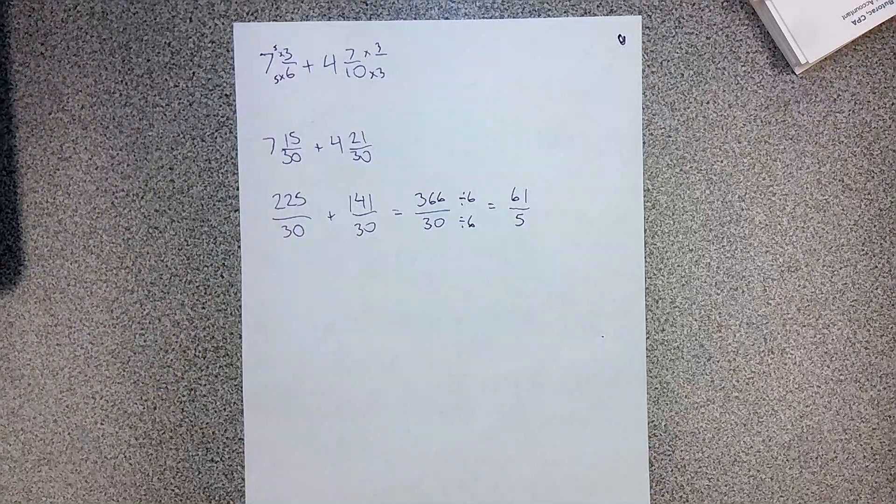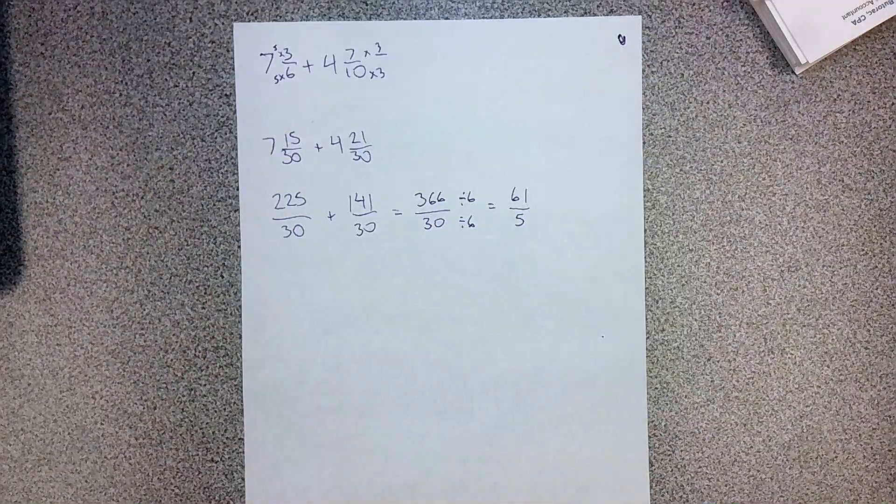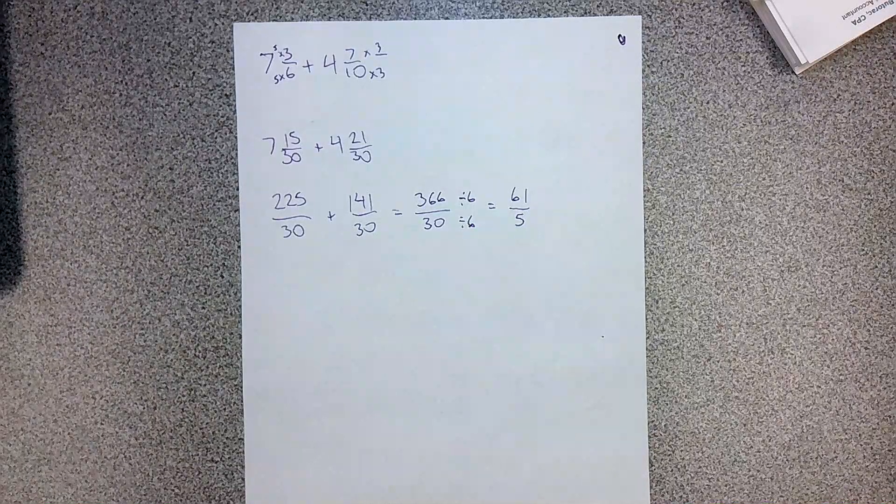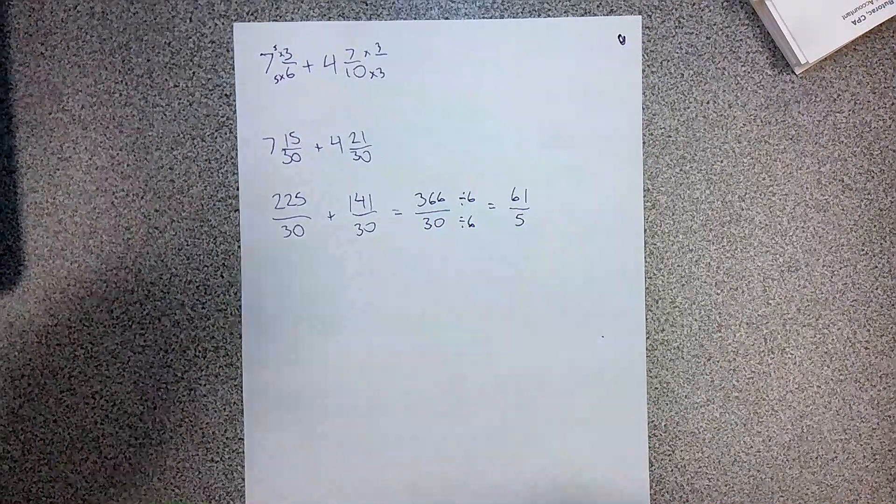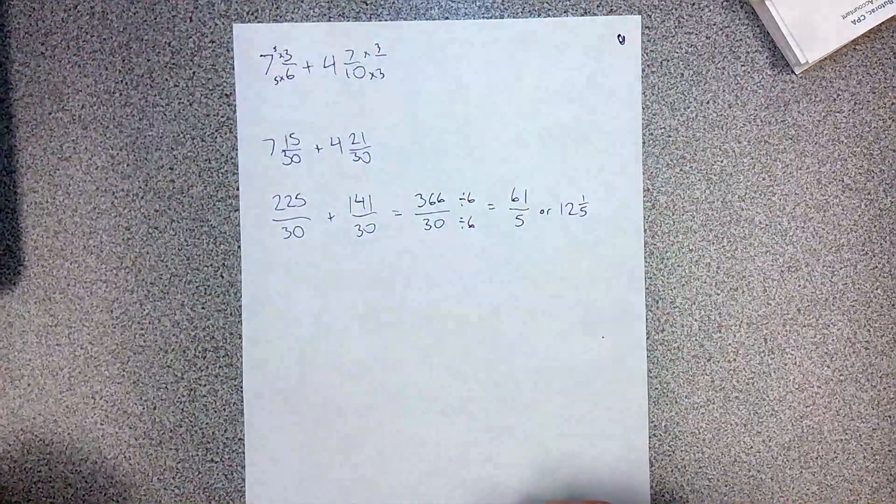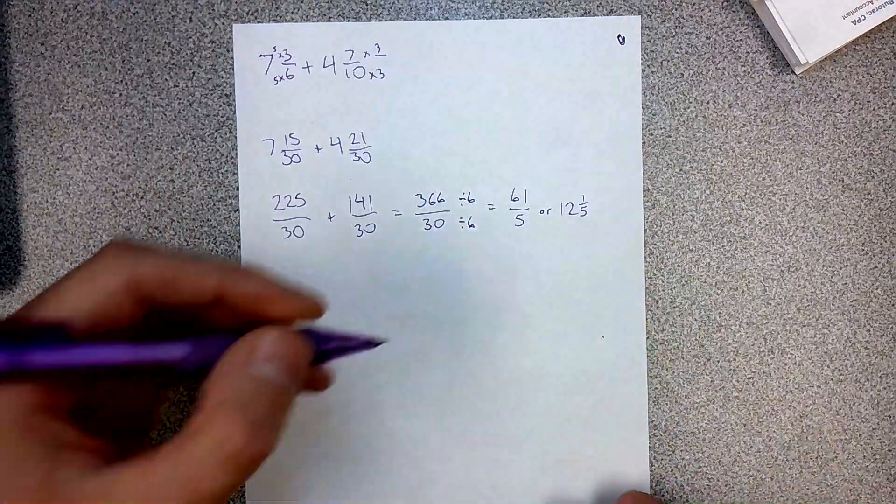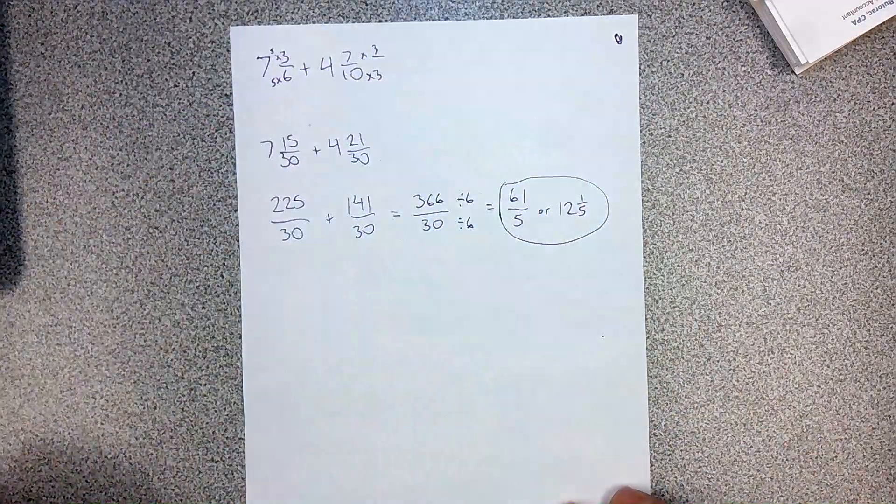61 fifths. You could simplify this into a mixed number if you wanted. I'm okay with that. If you want to do that, what would that be? That would be 12 and one-fifth, I think. Yeah, that seems right. So either of these are correct. But that's how we get that answer.